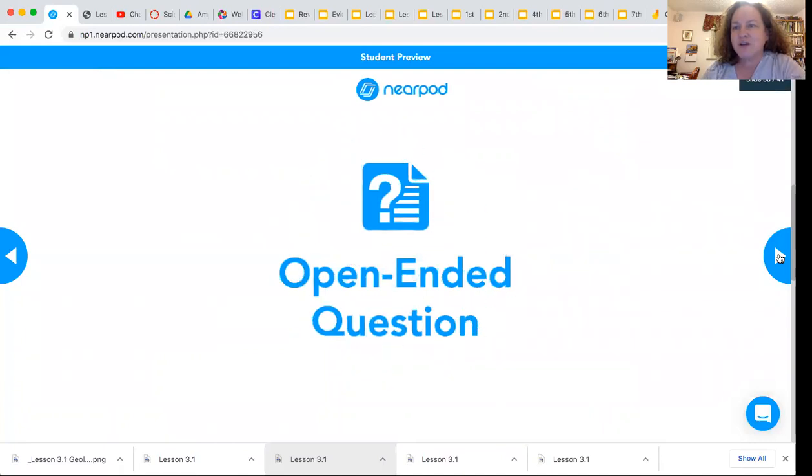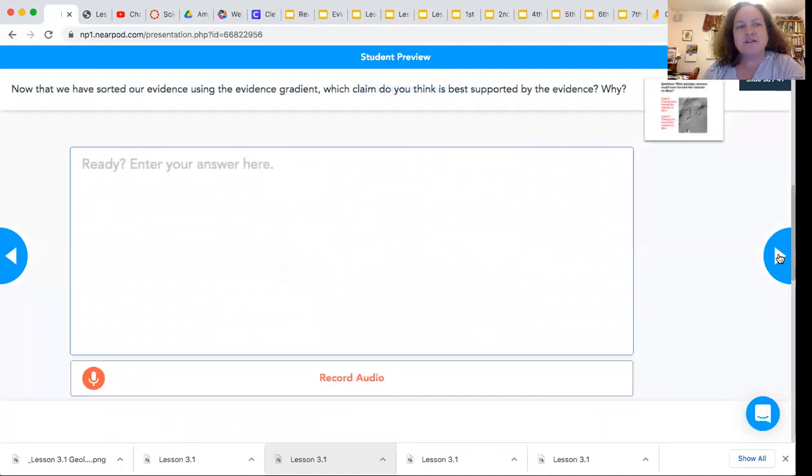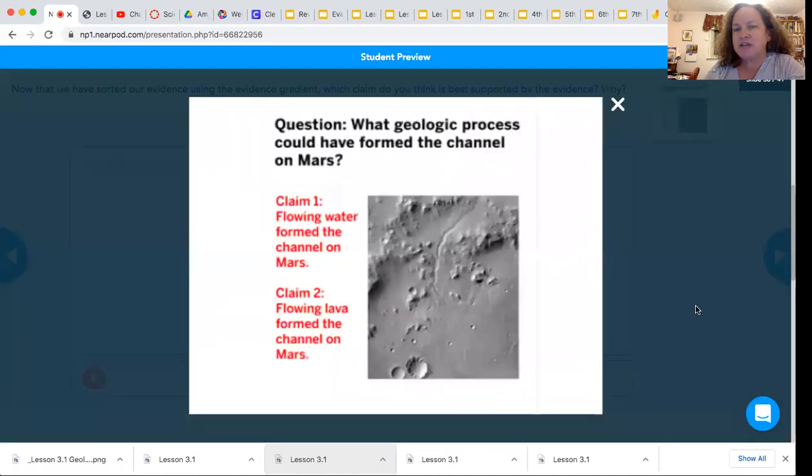Now I want you to take some time to think about the evidence. Now that we've sorted it, which claim do you think is best supported by the evidence and why? Remember that the question we're asking is: what geologic process could have formed the channel on Mars?